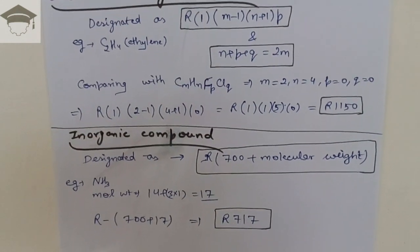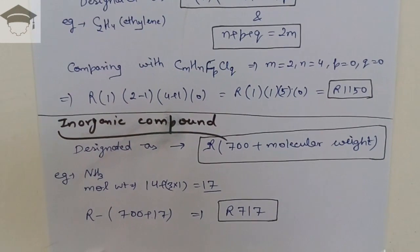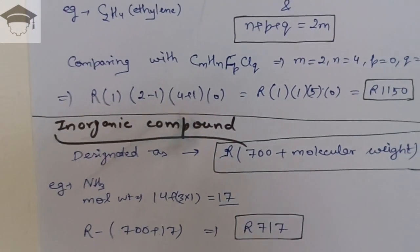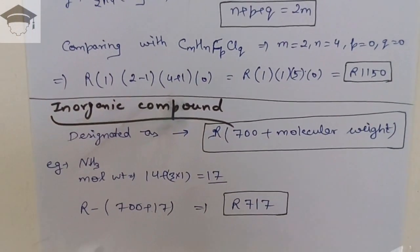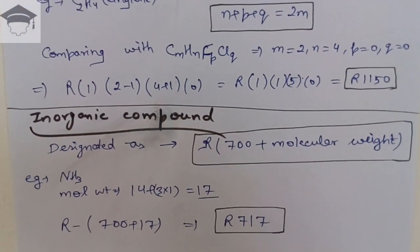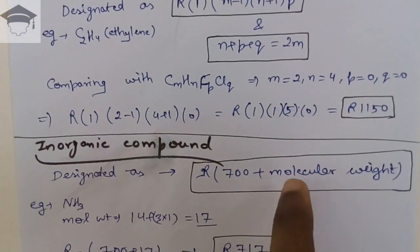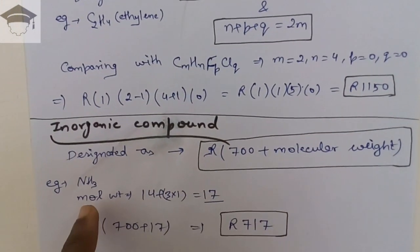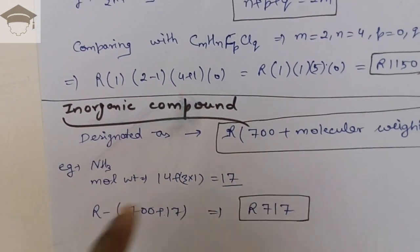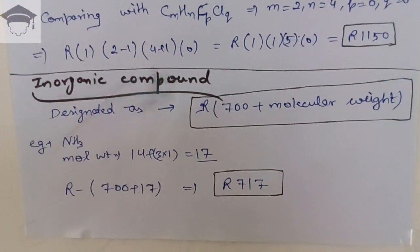For inorganic compounds like ammonia and water — compounds which do not contain carbon — they are also used as refrigerants. They are designated by the rule: R(700 + molecular weight of the refrigerant). For example, NH3 has a molecular weight of 14 + 3×1 = 17, so it is written as R(700 + 17).